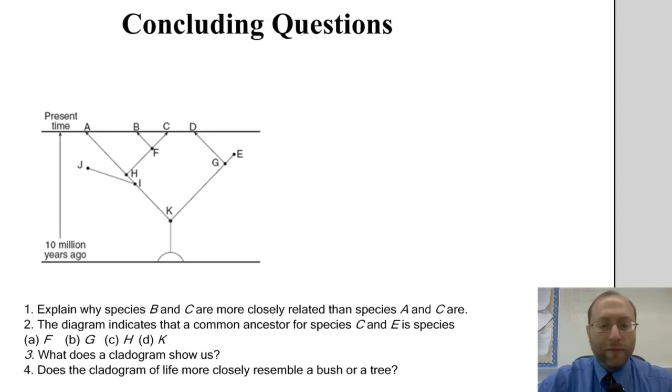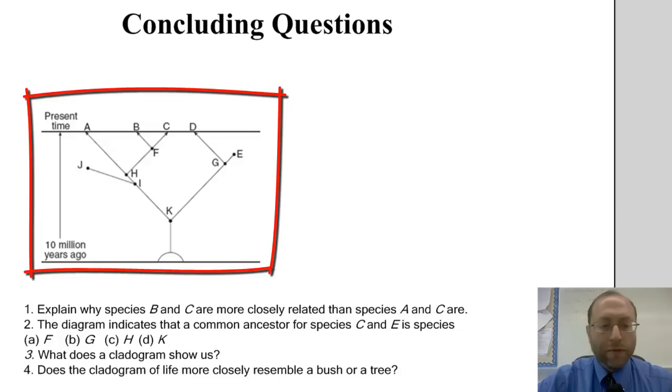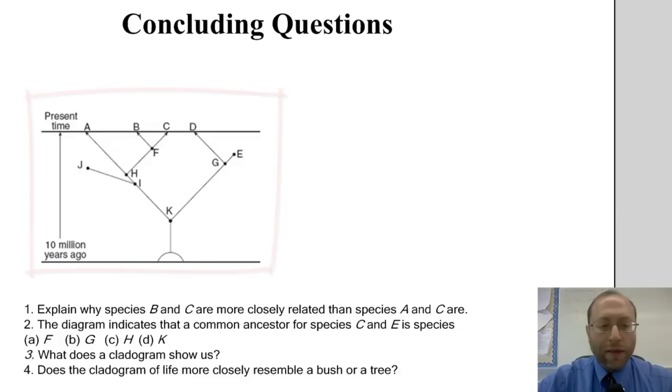Now we come to the concluding questions, and for this we are referring to this cladogram here, for at least the first two. Number one: explain why species B and species C are more closely related than species A and species C. Number two: the diagram indicates that the common ancestor for species C and species E is A, F, B, G, C, H, D, or K. Three, now three and four do not necessarily refer to that cladogram above. Three: what does a cladogram show us? This is just a general question. Number four: does the cladogram of life more closely resemble a bush? That brings us to the end of this podcast, and I will see you in class tomorrow.